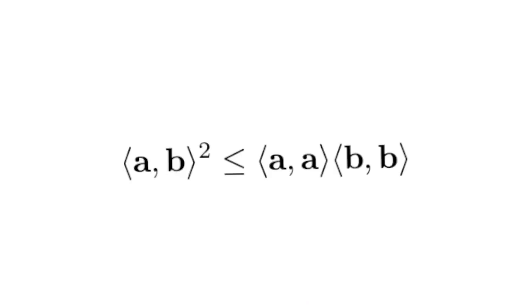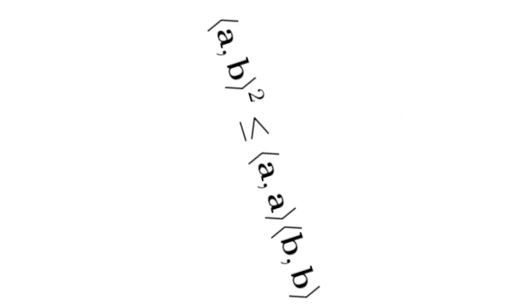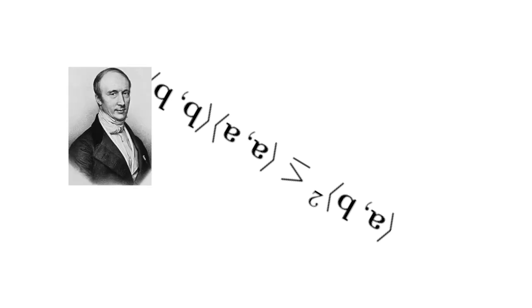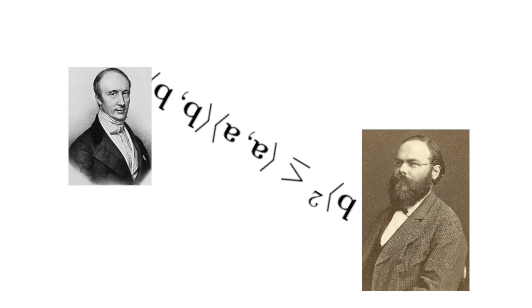Number 3: Cauchy-Schwarz Inequality. Have you ever seen an inner product space and noticed that the square of the inner product was less than or equal to the product of the squared lengths? This is thanks to Cauchy and Schwarz and the inequality that they made.